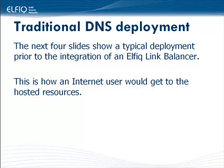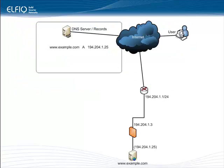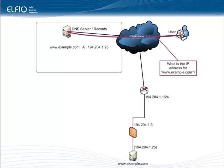First, we'll take a look at how an enterprise would typically make its resources available to Internet users. Here is an Internet user that wants to get to www.example.com within the enterprise. The first step is for that user to make a DNS request, which will end up going to an externally hosted DNS service. The user will ask: what is the IP address for www.example.com?